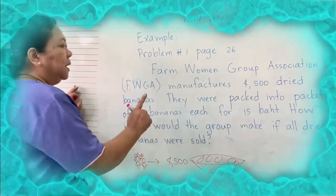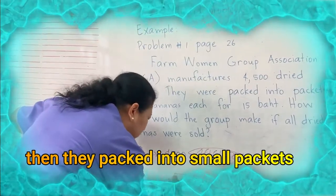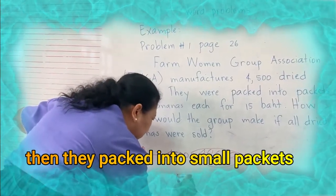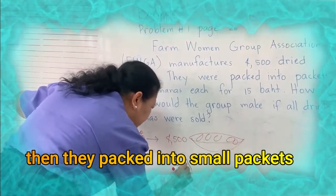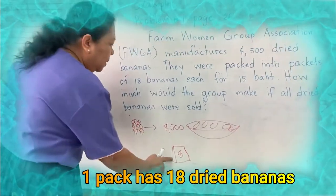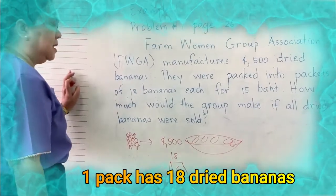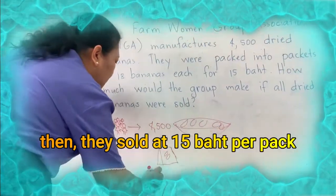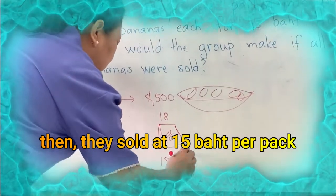And then they packed this into small packets. Small packets like this. So this is the packet of banana, dry banana. And one pack has 18 dried bananas.